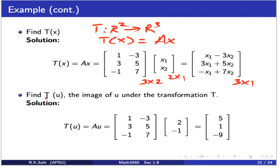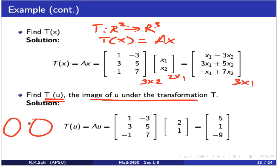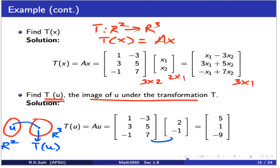Now let's find T(u), where u is a specific vector in R^2. We want the image of u under the transformation T. We simply replace x with the vector u and do the matrix product. The result is the vector (5, 1, -9) in R^3.